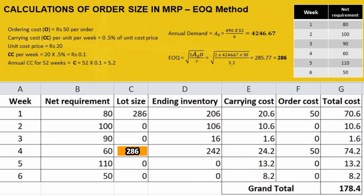When we calculate the total cost, it comes to 178.4, which is less than the 300 total cost calculated using the lot-for-lot method.